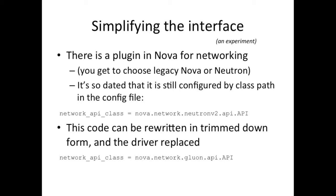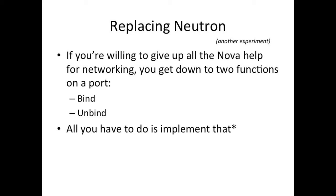So we experimented. We simplified the interface a little. It turns out that if you look into the Nova code, there's actually a plug-in there already for networking — it used to allow you to choose between Nova network and Neutron. It's one big file with a whole bunch of functions you can call: create port, create network, bind, unbind, and all the rest. We took that, copied it, and trimmed out all the cruft. We end up with a Gluon interface that calls out to Gluon — instead of Neutron — to try to do binding and unbinding. The rest is unimplemented. It seems to work. You end up losing all of the helpers, but you get the bind and unbind to work, and all you have to do is implement that little bit. We've done some testing — it does work. It gives you a whole bunch of interesting additional problems, but it's a place for us to start.